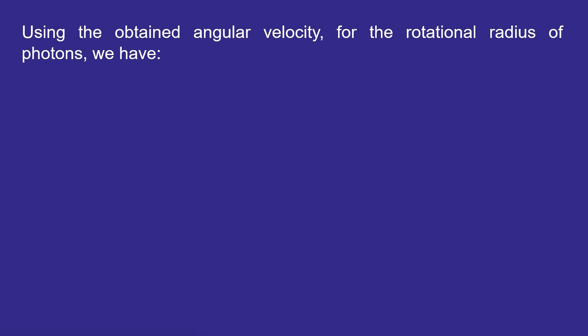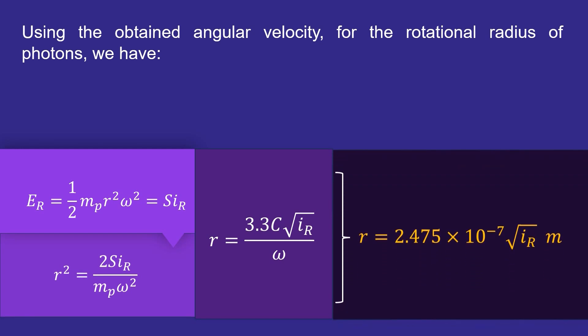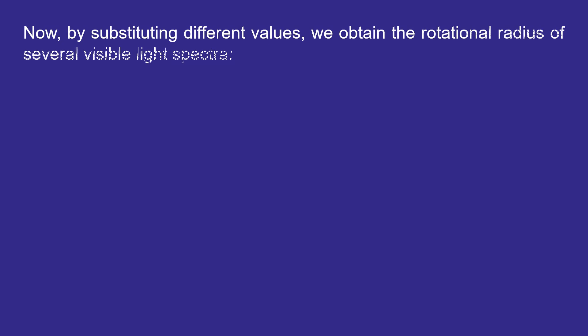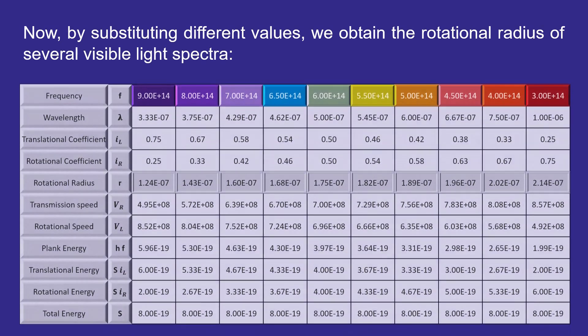Using the obtained angular velocity for the rotational radius of photons, we have several visible light spectra. Now, by substituting different values, we obtain the rotational radius of several visible light spectra.